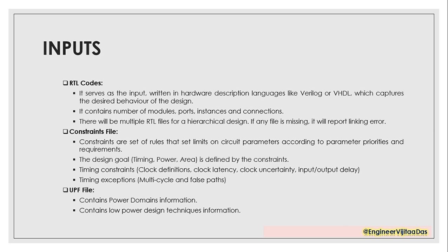Let's look into the inputs required for synthesis. First, we need RTL codes - that is the most primary input needed for synthesis. RTL codes are written in hardware description language (HDL) like Verilog or VHDL, which contains the functionality and behavior of the design. It also contains information like number of modules, ports, instances, and their connections. There will be multiple RTL files for a hierarchical top-chip-level design, and if any file is missing, the synthesis tool will report a linking error.